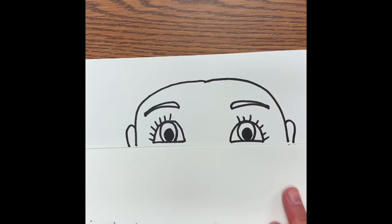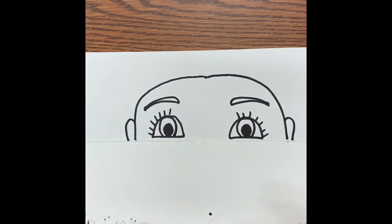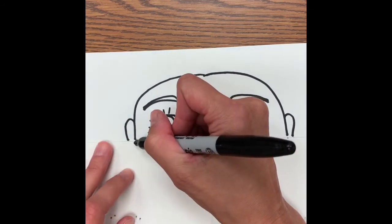Now I'm going to draw my chin. So I'm going to find where my middle is again, put a dot. It shouldn't be all the way down at the bottom of your paper, but pretty close.